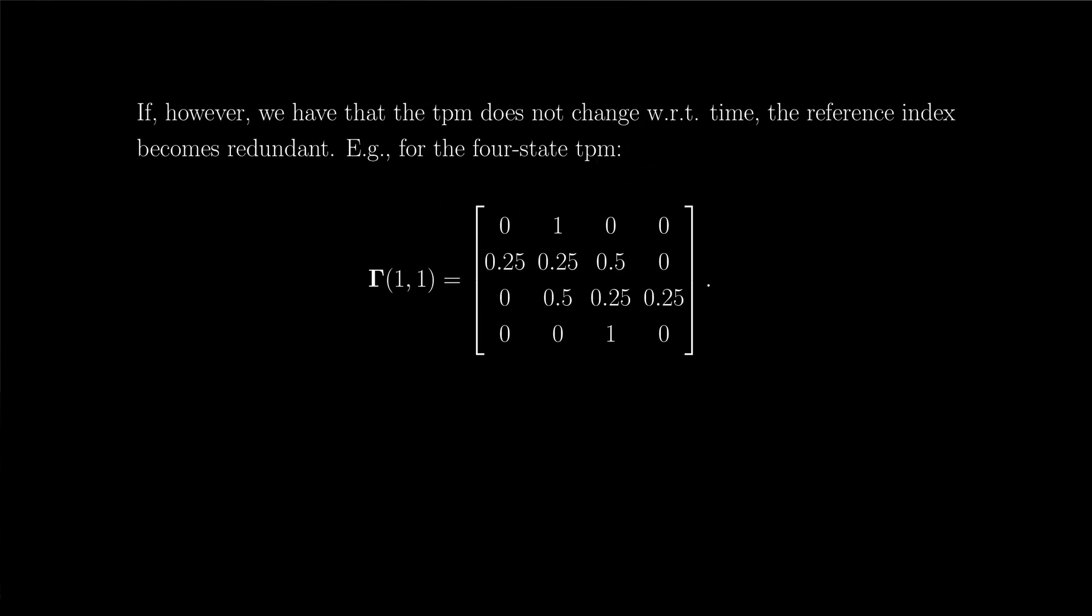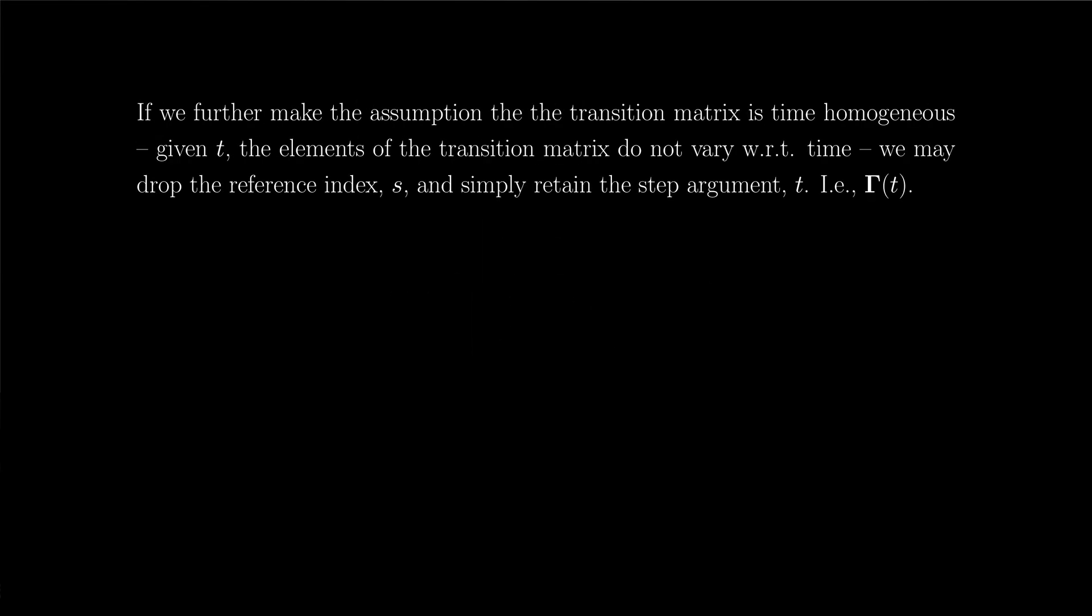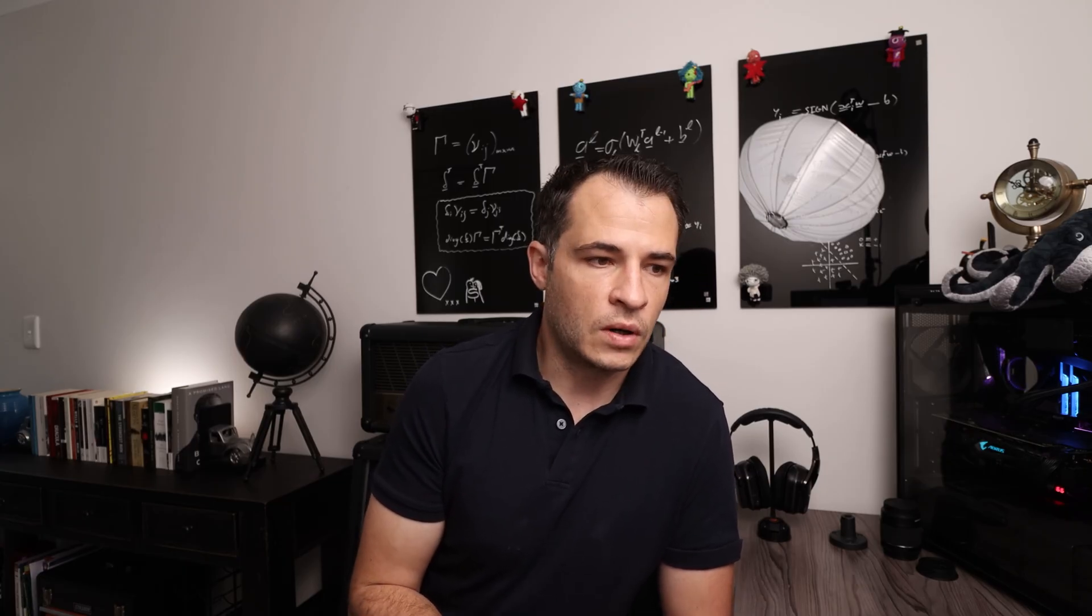If, however, your transition probability matrix does not change with respect to time, it is said to be time homogeneous. In the case of a time homogeneous Markov chain, the reference point becomes somewhat redundant, and we can drop it from our notation, right? So we retain only the t, and our model is described in terms of the t-step transition probability matrix minus the s index, and we simply denote it as uppercase gamma t. Now for our purposes, unless stated otherwise, we will impose the assumption of time homogeneity as another assumption on our probability model.